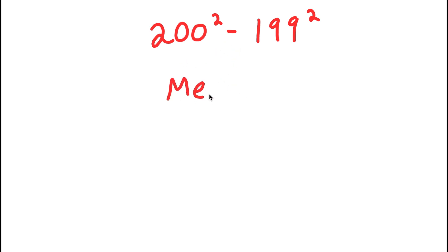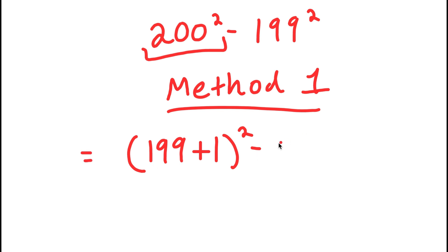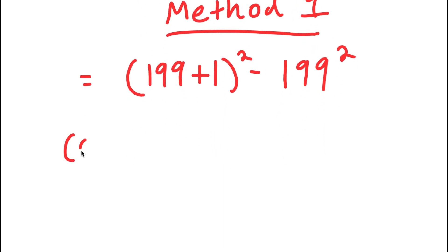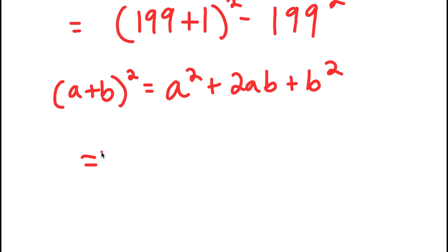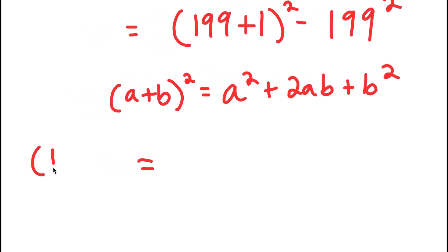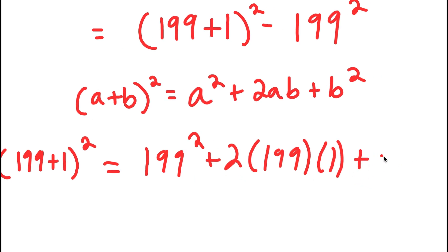For method number one, what I'm going to do is rewrite 200 squared as 199 plus one, squared. So now I have 199 plus one, squared, minus 199 squared. If I have something in the form a plus b squared, this is equal to a squared plus 2ab plus b squared. So 199 plus one squared equals 199 squared plus 2 times 199 times 1 plus 1 squared.